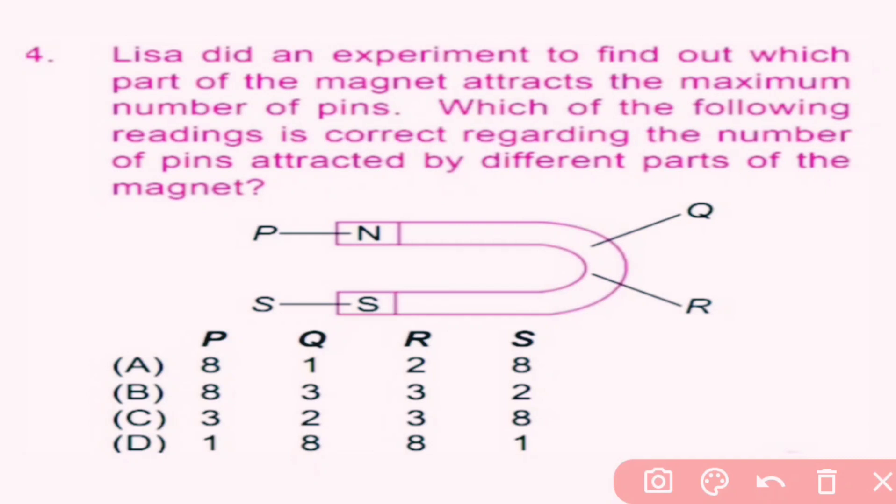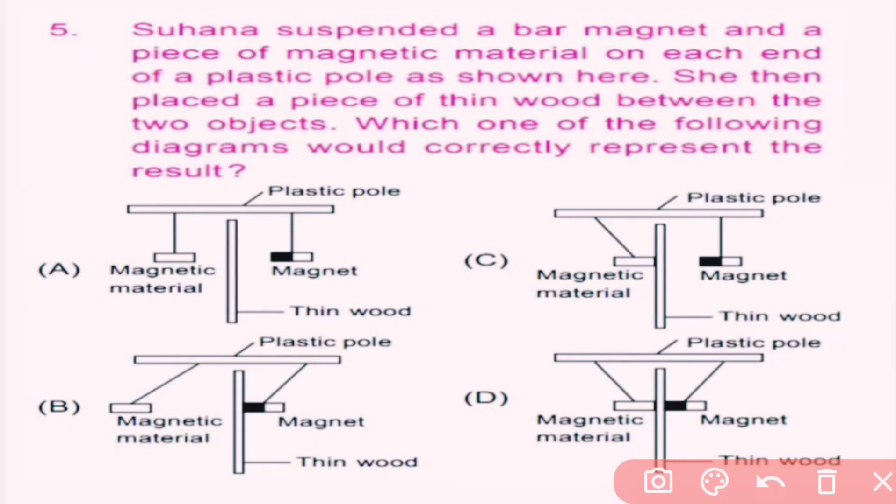Magnetic force is strongest at the poles, so here P and S are at the poles, so they will attract the maximum number of pins. In option A, P and S show the maximum number of pins, so here A is the correct answer.